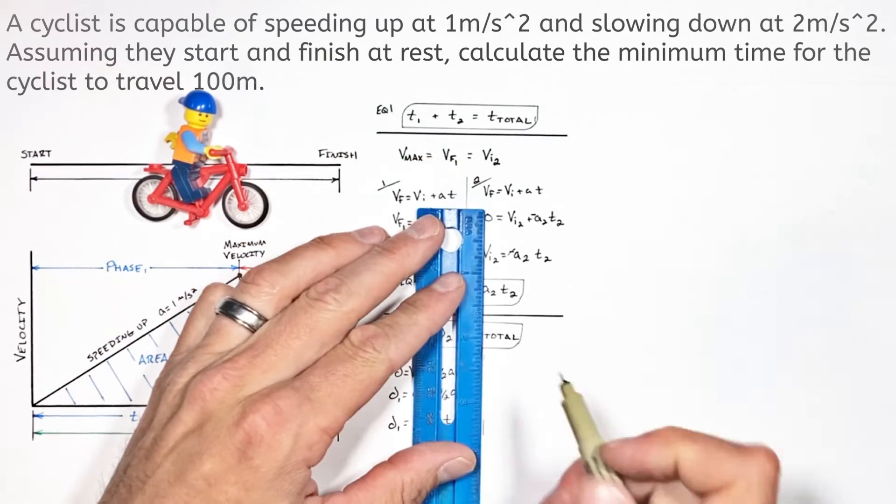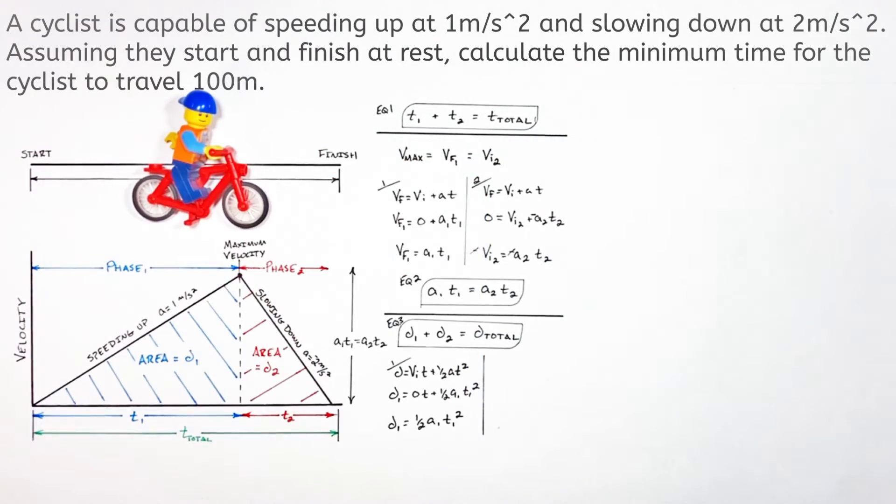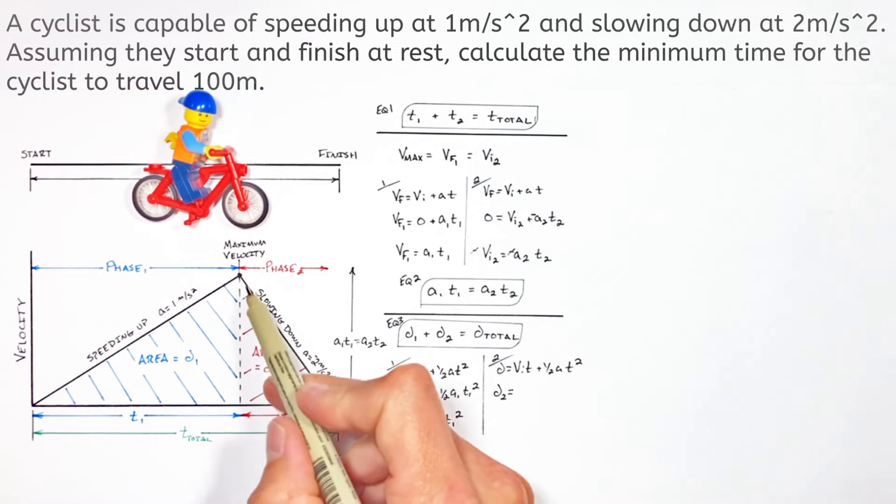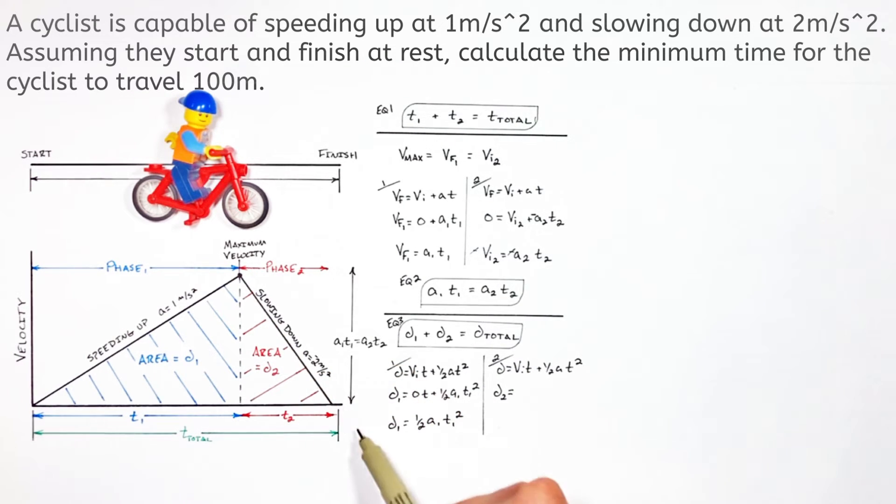Now, moving on to the displacement for phase two, again, we're using the displacement equation, but the issue comes up in dealing with negatives. You see, D2 is equal to the initial velocity, which is not going to be zero. So we're just going to call it V initial in phase one. Multiplied by time one plus one half